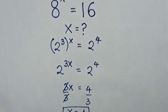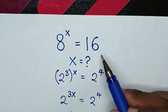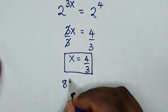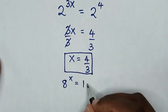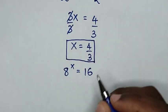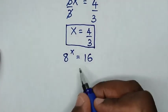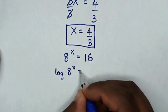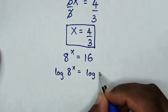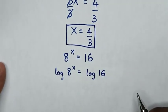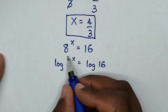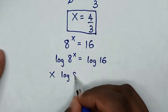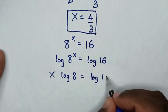Alternatively, we can solve this equation by using logarithm, which is 8 power x is equal to 16. We apply log on both sides: log of 8 power x is equal to log of 16. Then the power of x will move to the base, so it will be x log of 8 is equal to log of 16.